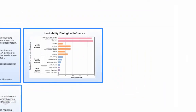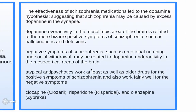Dopamine overactivity in the mesolimbic area of the brain is related to the more bizarre symptoms of schizophrenia, such as hallucinations and delusions. Negative symptoms such as emotional numbing and social withdrawal may be related to dopamine underactivity in the mesocortical areas. Atypical antipsychotics work at least as well as older drugs for the positive symptoms of schizophrenia and also work fairly well for the negative symptoms.